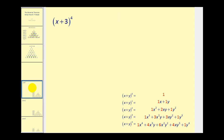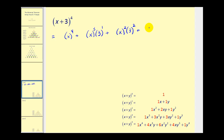If we have the quantity x plus three raised to the fourth power, let's first deal with the pattern of the exponents in each term, then we'll deal with the coefficients. The first term will have four factors of x and zero factors of three. The next term will have three factors of x and one factor of three — notice three plus one equals four. The next term will have two factors of x and two factors of three, then one factor of x and three factors of three, and finally zero factors of x but four factors of three. Notice all along the exponents add to four, which is the original exponent on the binomial.